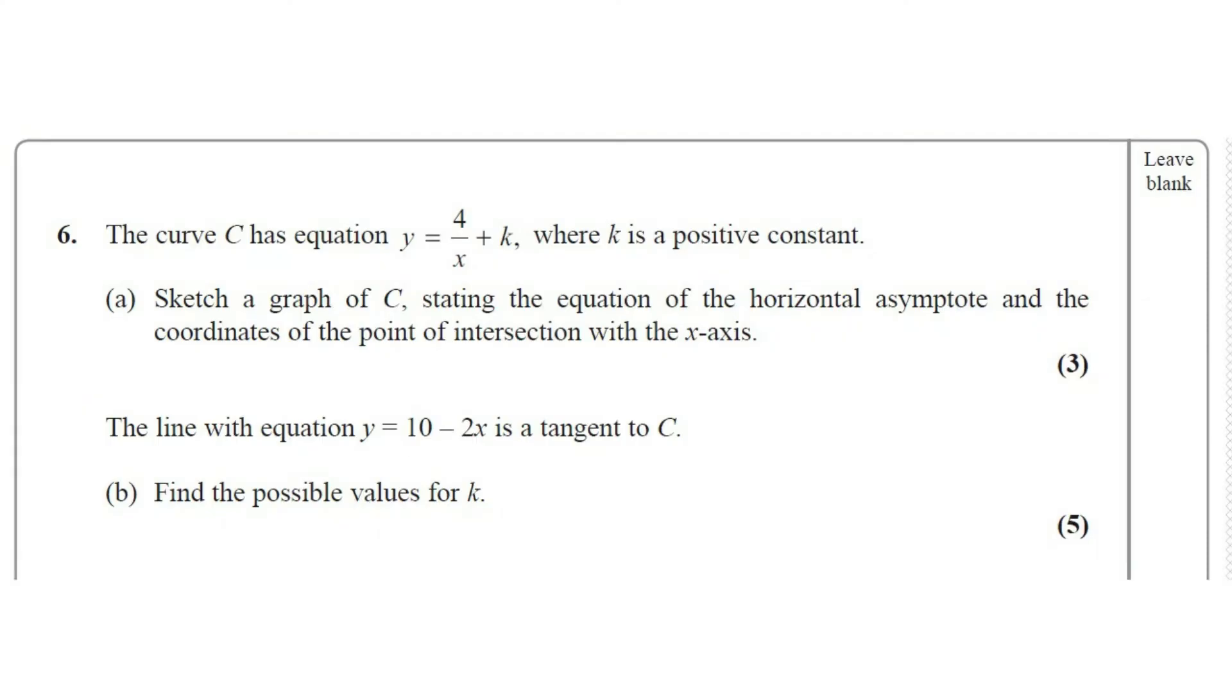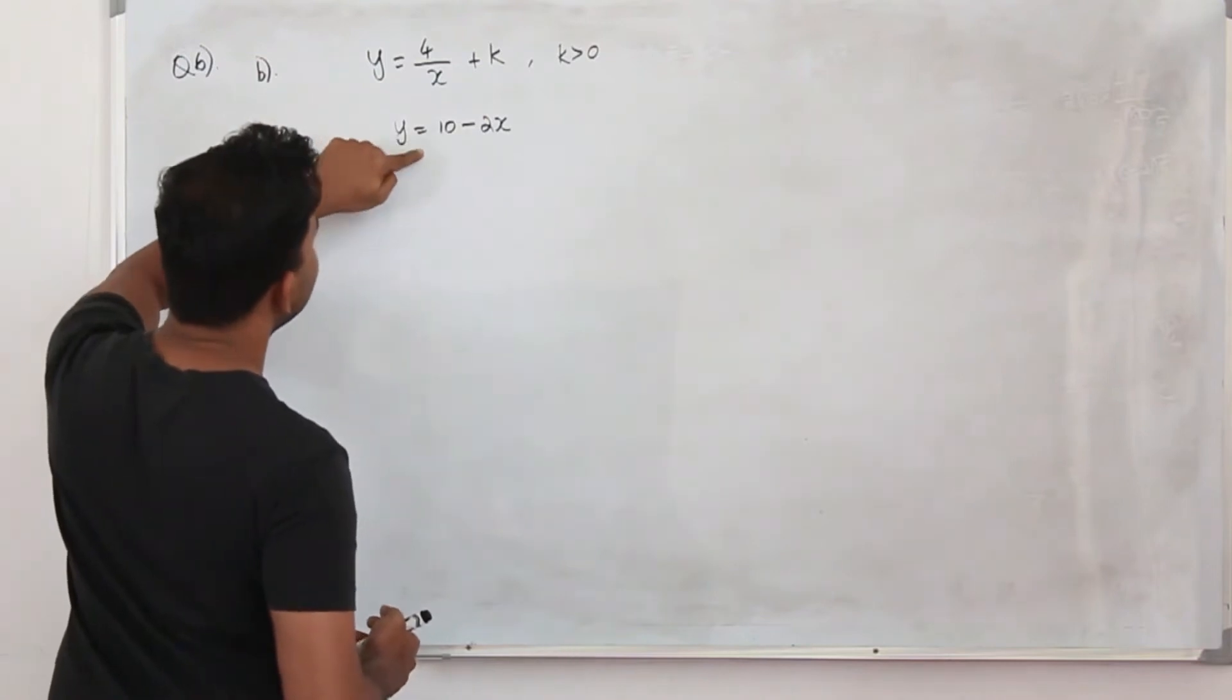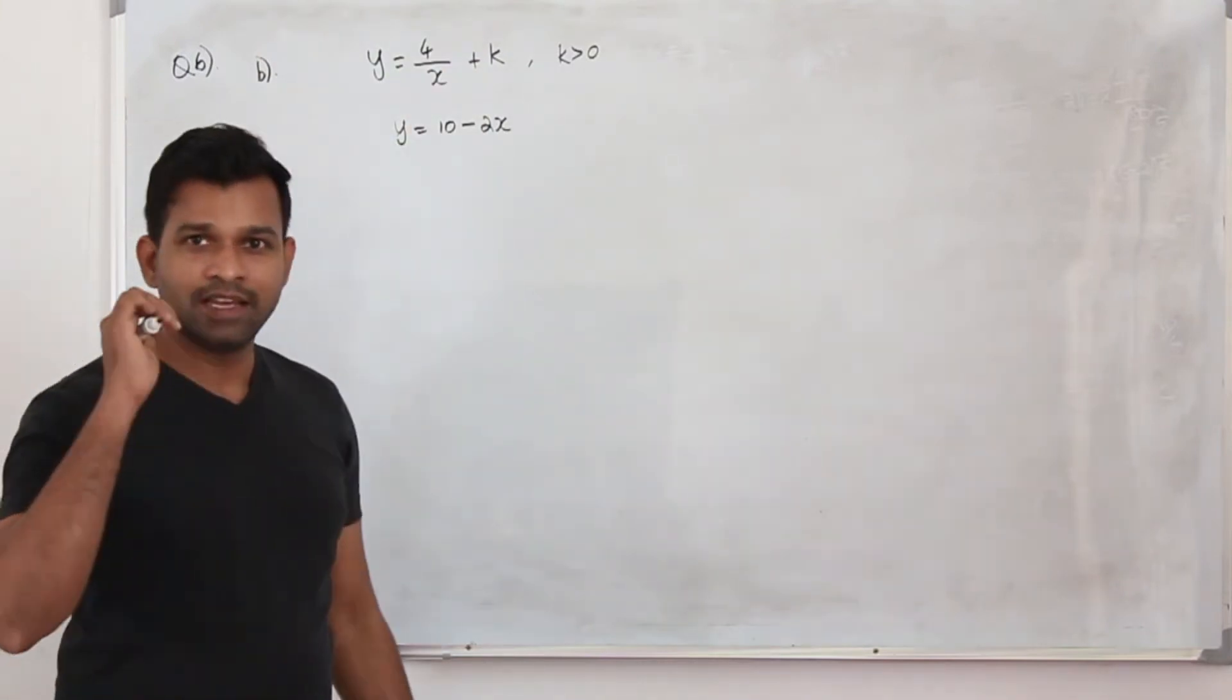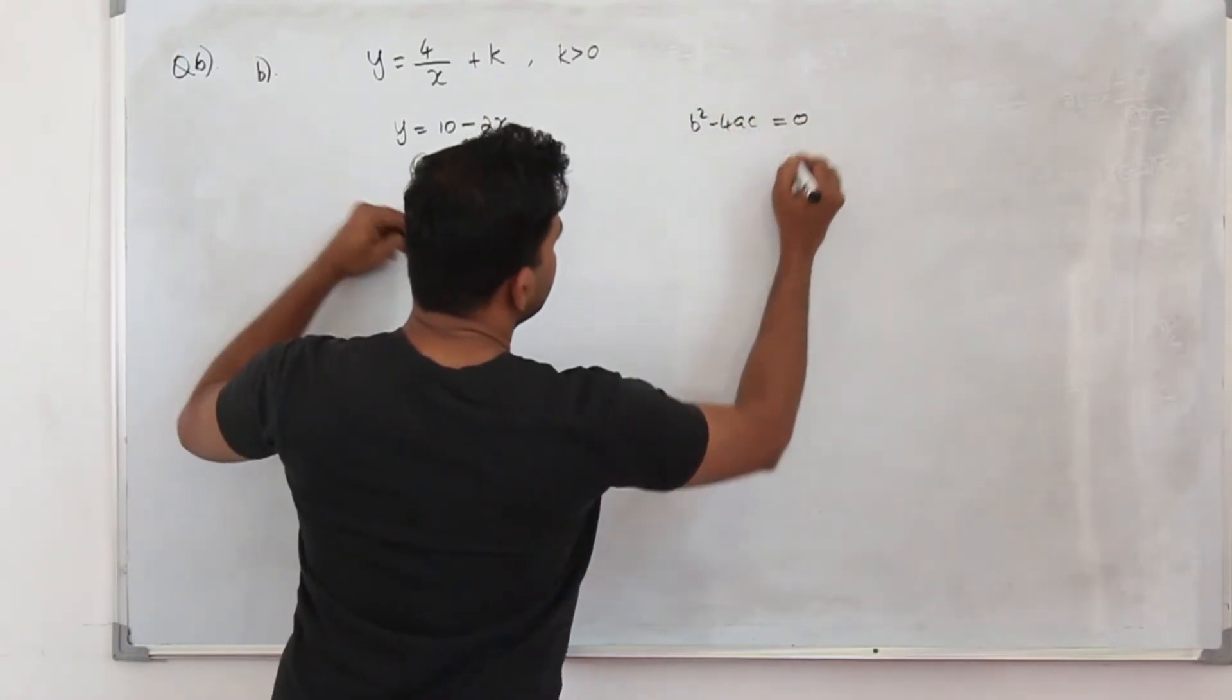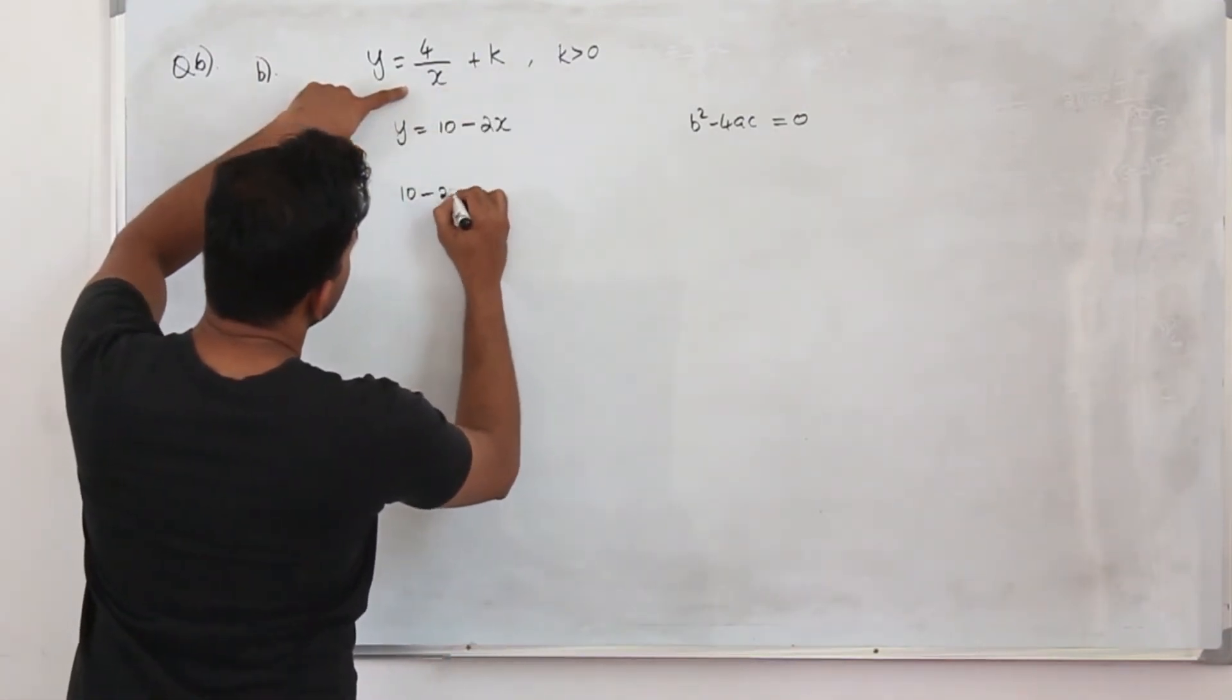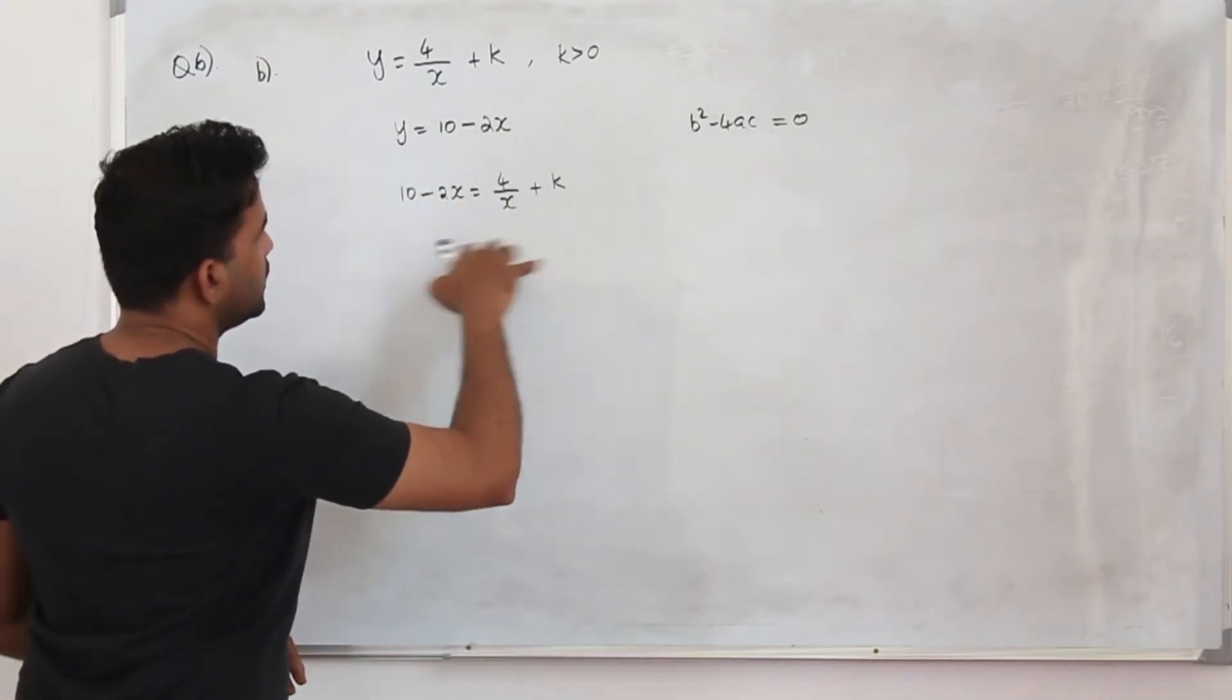Part B. The line with the equation y equals 10 minus 2x is a tangent to the curve C. Find the possible values for k. This question has 5 marks. You are given another equation y equals 10 minus 2x. This is a linear equation and this straight line is a tangent to this reciprocal graph. Tangent means the line touches the curve at exactly one point. So we know for sure when you combine them, your b square minus 4ac will be 0. Because the line touches the curve at one point.